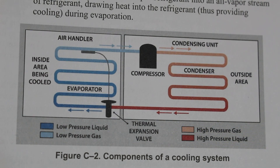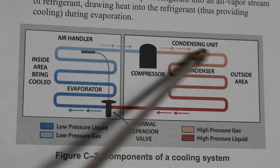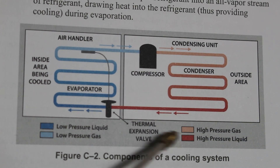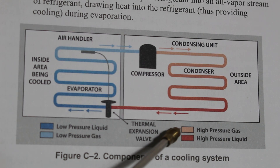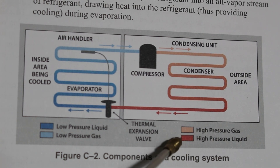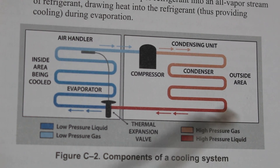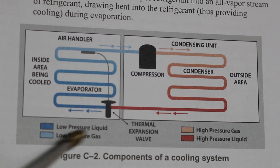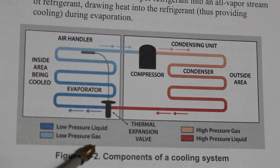To make this diagram a bit easier to read, let's follow our arrows and also go by our color code. As you can see, this color represents high pressure gas, this one represents high pressure liquid, this one represents low pressure liquid, and this one represents low pressure gas.